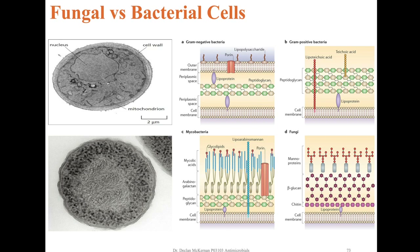If we compare the cell structures with some bacterial cell types, we can see that they have cell membranes and nuclei. However, they differ substantially in the proteins and lipoproteins that are external to their cell membranes. For example, instead of peptidoglycan or LPS found in bacteria, fungi have something called beta-glucan.